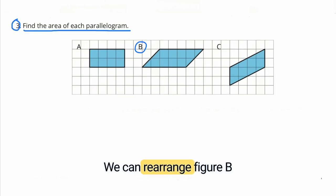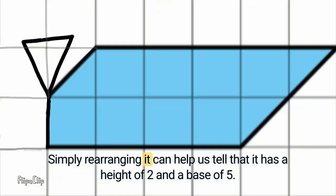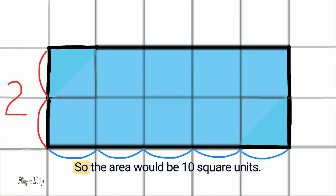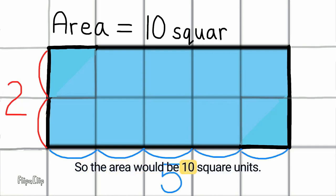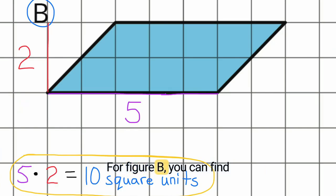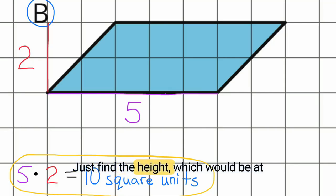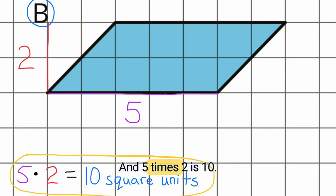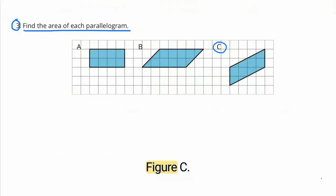For figure B, we can rearrange it so it looks a lot like figure A. Simply rearranging it helps us see it has a height of 2 and a base of 5, so the area would be 10 square units. You can also find the area without rearranging — just find the height at a 90-degree angle compared to the base. With a base of 5 and height of 2, 5 times 2 is 10, so the area is 10 square units.